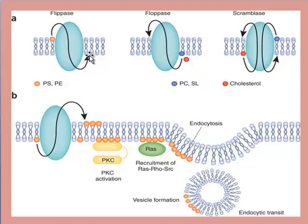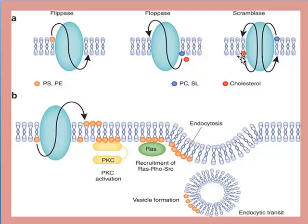And what is the function of flippases? Flippases will reverse back this protein to the upper side, from where it was flipped, as you can see. And in the third case, you can see the scramblases. What they do is maintain both the flip and flop movements — this protein is known as scramblases.